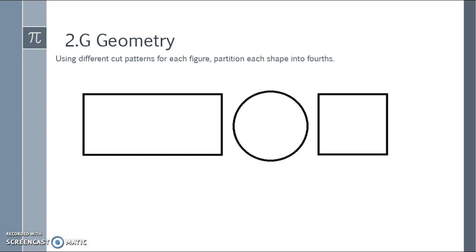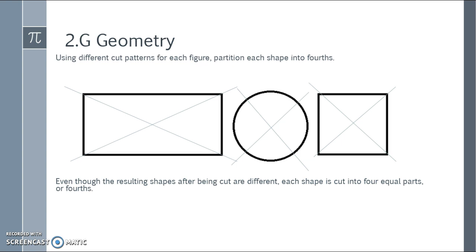Using the same shapes and a different cut pattern for each figure, partition each shape into fourths as well. So pause the video, see if you can do it a different way. And maybe your first way was a different way than mine. So the second way I did it was to cross, go across them, so in an X pattern on each one. Even though the resulting shapes after being cut are different, each shape is cut into four equal parts or fourths.